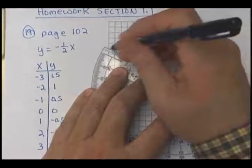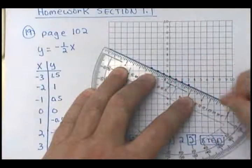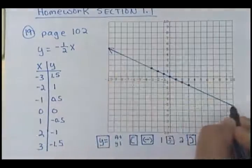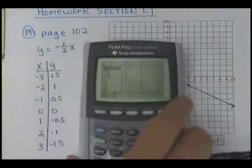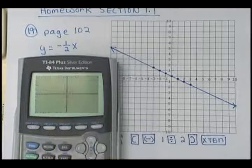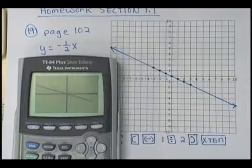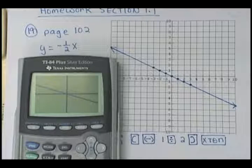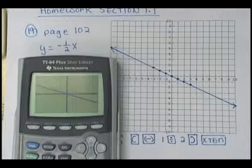Now, on your calculator, do zoom 6. Again, that's going to graph it in standard setting. So, I've got my calculator here, and we're going to see if we get the same looking graph. I'm going to do zoom 6. Does that look pretty similar to our graph? Everybody okay there?